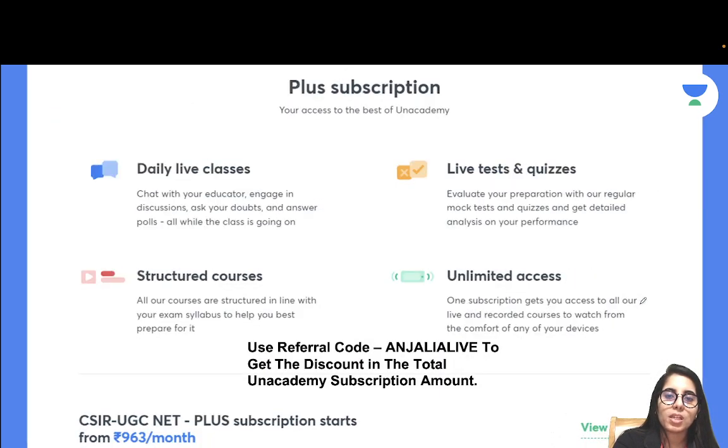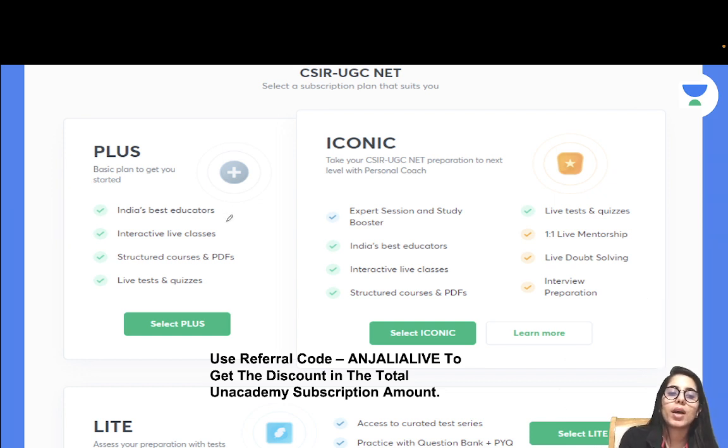Right now we are going to keep it this much. I'm going to show you one slide related to Unacademy subscription. We are having the Unacademy Plus, Iconic, and Lite subscriptions available. Depending on which one you find more beneficial, you can take that subscription. When you go ahead to take the subscription, use and apply the code ANCHLIALIVE to get the discount in the total subscription amount.